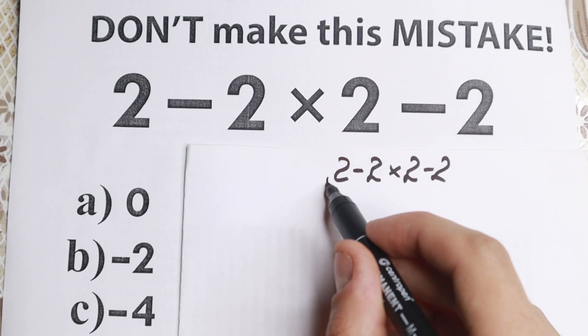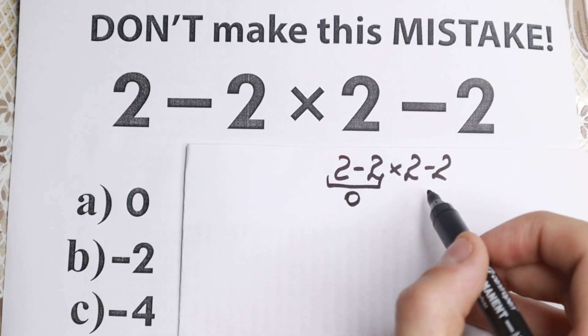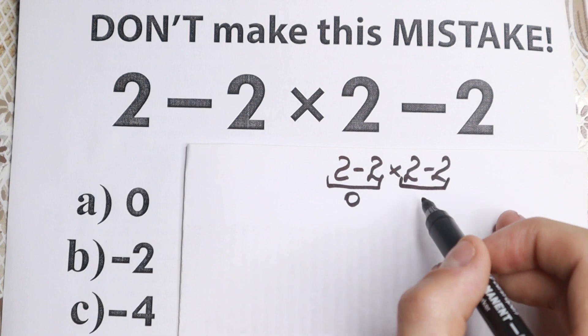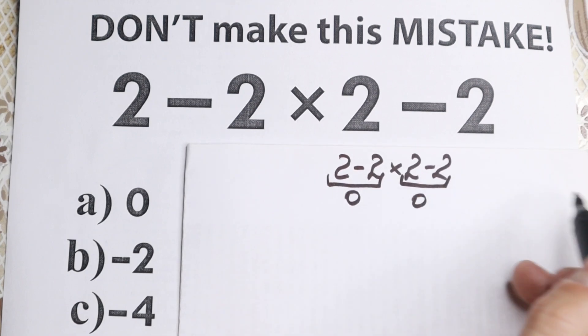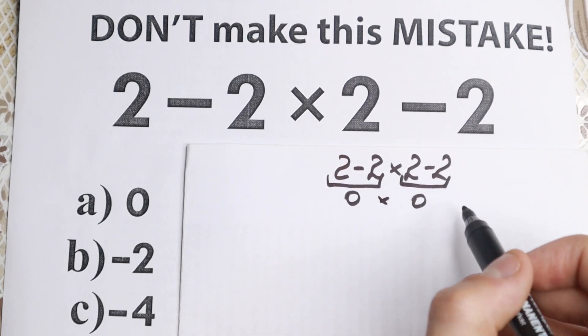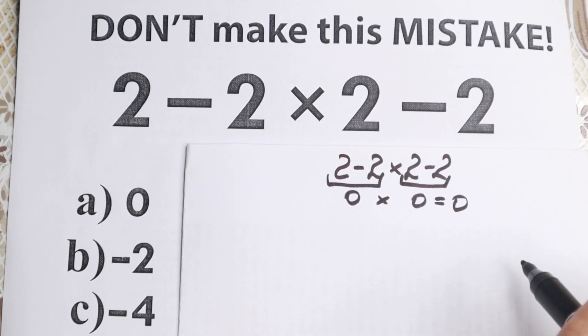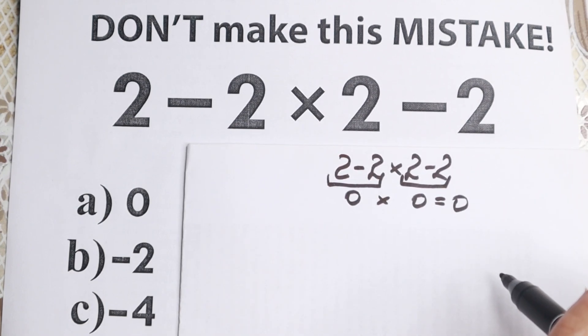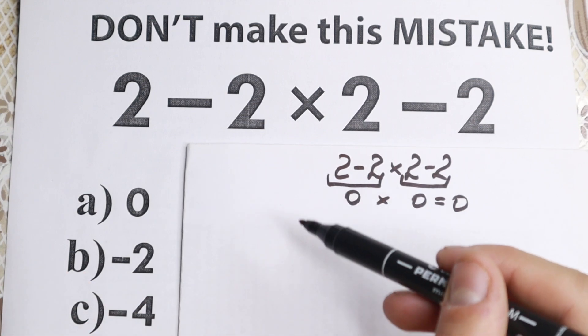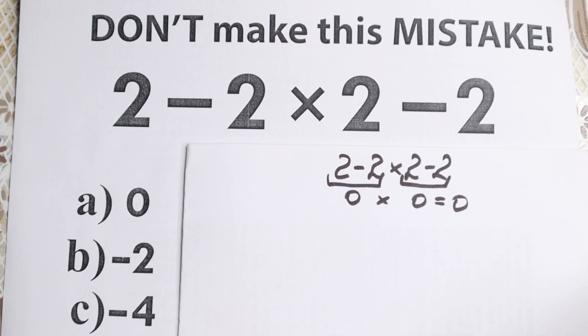they say okay 2 minus 2, this is equal to zero, and they say okay 2 minus 2 in the end, this is as well equal to zero, and then zero times zero equal to zero, and they say the correct answer is option A. So as you can see, obviously whatever order you select is going to create a different answer. So we need to understand what is the correct order to do this problem, and this is the main thing right here.